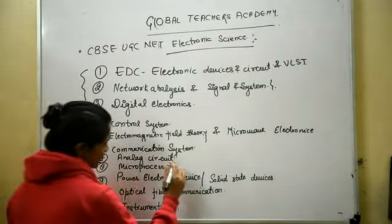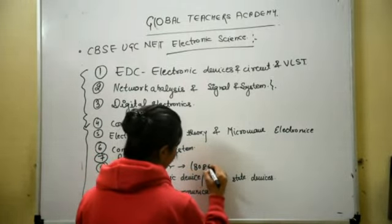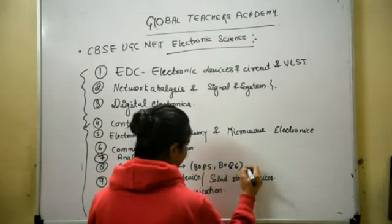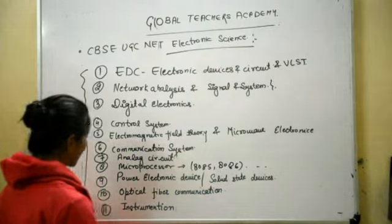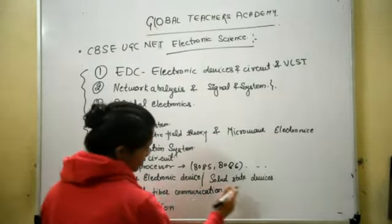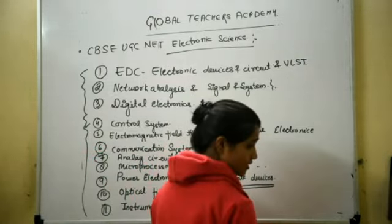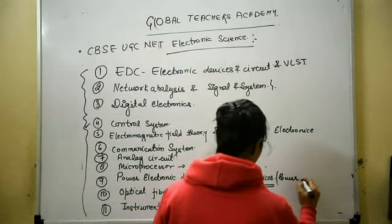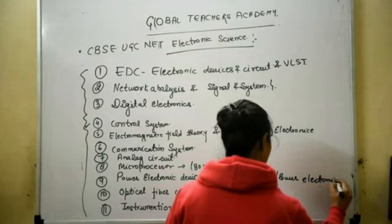The seventh unit is Analog Circuits. The eighth unit is Microprocessor, which consists of 8085 and 8086 — I will discuss that in detail after some time. The ninth unit is Power Electronics Devices and Solar Distribution. It is a complete subject of Power Electronics, but here only some part of Power Electronics is given.